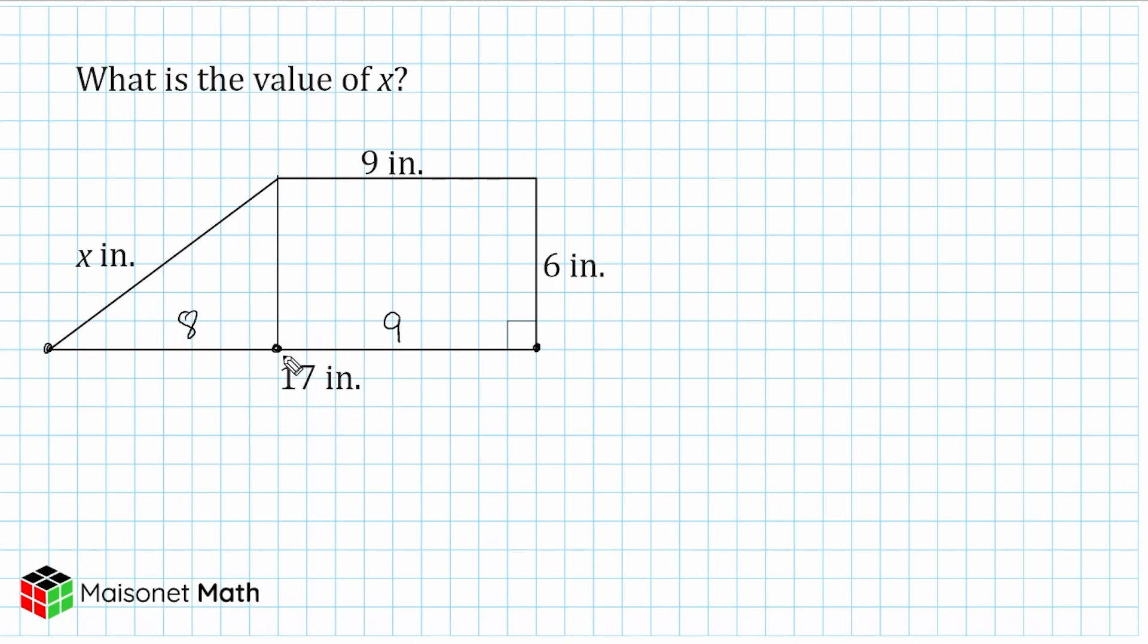Now, that's important because we have to find the value of x. And notice x is the hypotenuse of this right triangle that we just created. Now, to figure out what x is equal to, we need to know the length of each one of our triangle's legs.